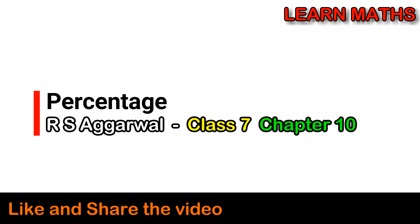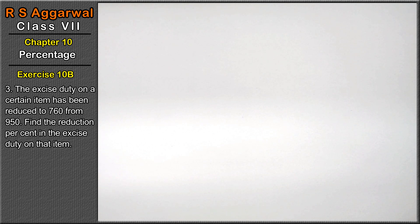Let's do question number 3 of exercise 10B, that is percentage. Question number 3: The excise duty on a certain item has been reduced to 760 from 950.